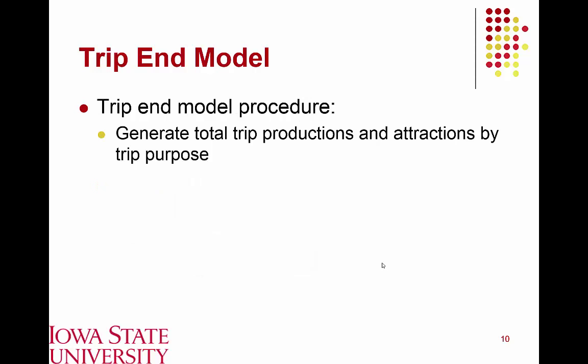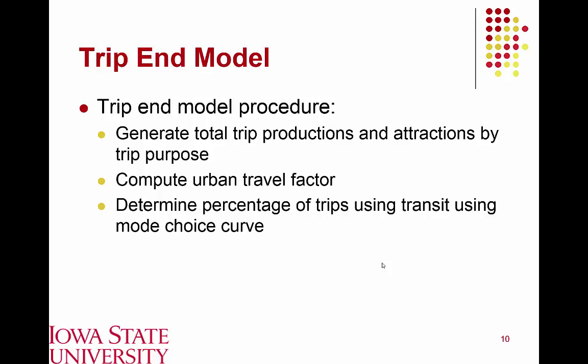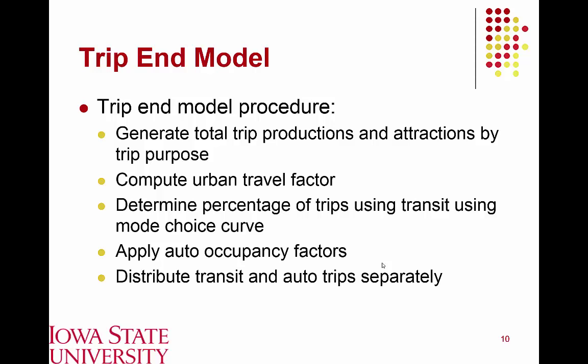In the trip end procedure, we first determine trip attractions and productions by purpose, then determine an urban travel factor. Depending upon how urbanized an area is, we compute this urban travel factor, which allows us to estimate the percentage of trips that will use transit versus other modes using a mode choice curve. Once we know how many trips will use each mode, we apply an auto occupancy factor — for example, 1.4 persons per automobile — to back calculate total vehicle trips. Trip distribution for auto and transit is then determined separately.